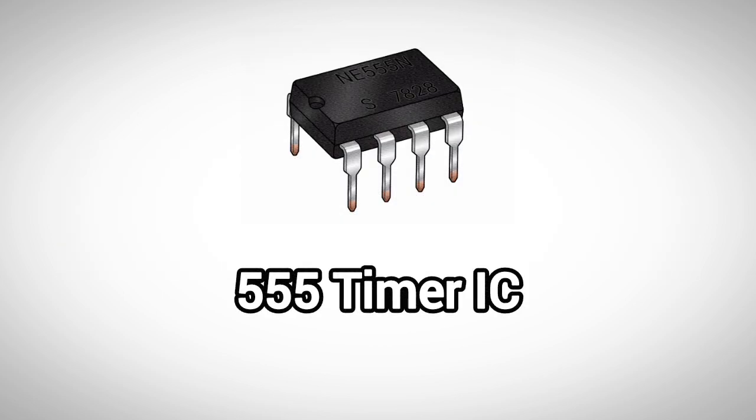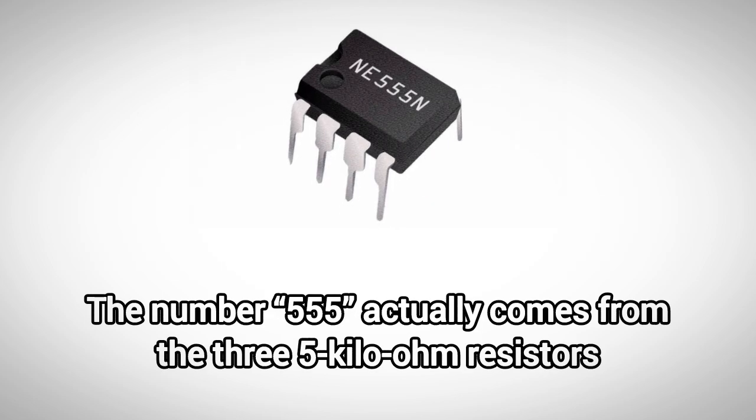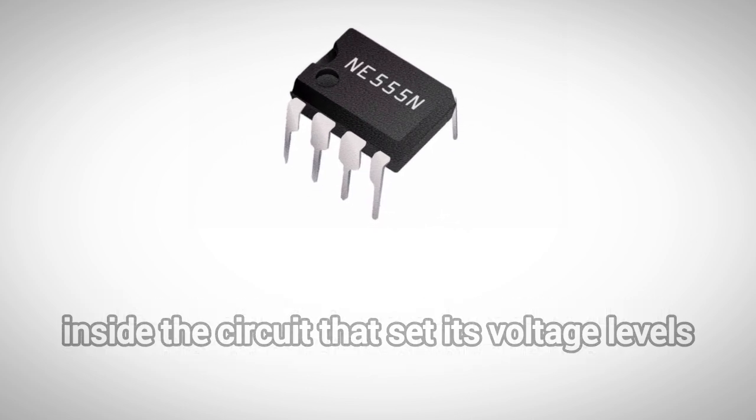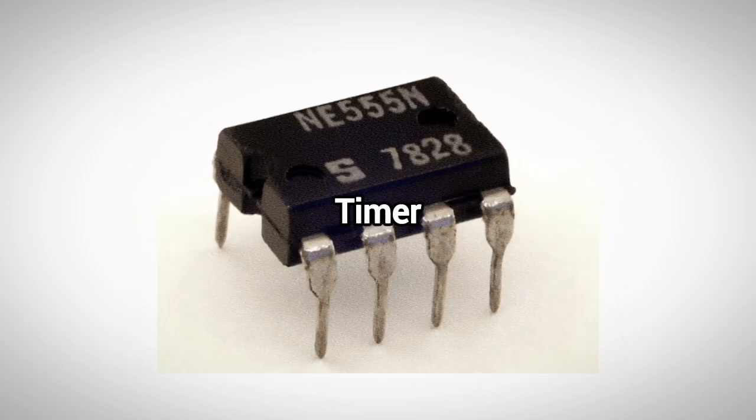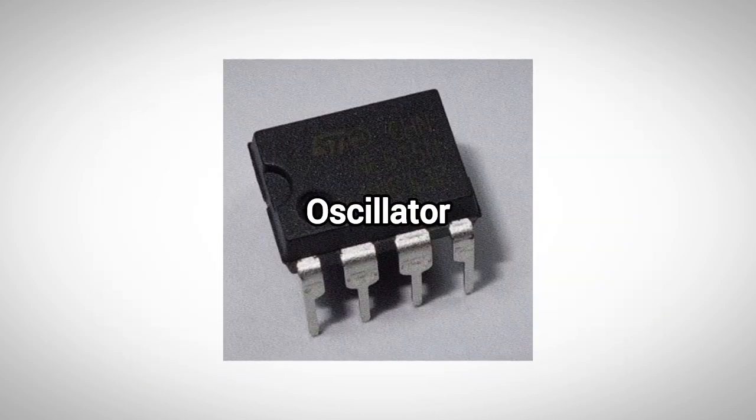Next up is the legendary 555 timer IC. The number 555 actually comes from the three 5 kilo-ohm resistors inside the circuit that set its voltage levels. This small chip can be used as a timer, pulse generator, or oscillator, which means it can create repeating signals or time delays in a circuit.